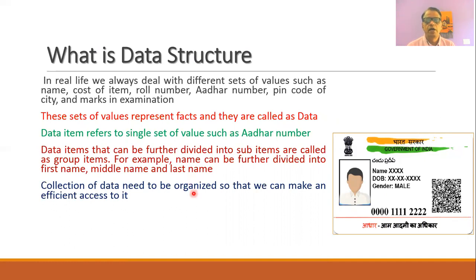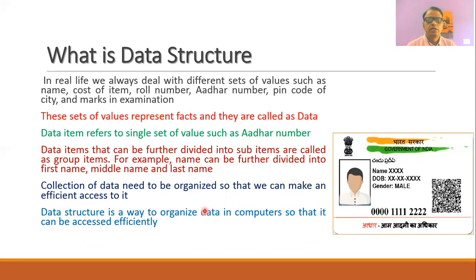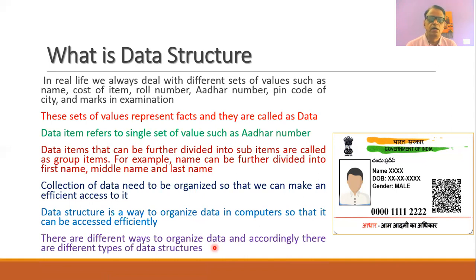A collection of data needs to be organized in such a way that we can make efficient access to it. Whenever we deal with data, we store it in computers or digital machines, and this data must be stored in a fashion that allows easy access to different data elements. So a data structure is a way to organize data in computers so that access to different elements can be made in an efficient manner. There are different ways to organize data, and therefore there are different data structures.